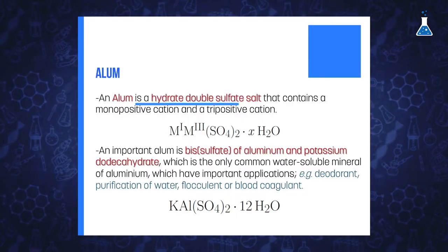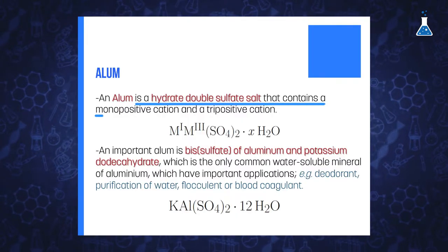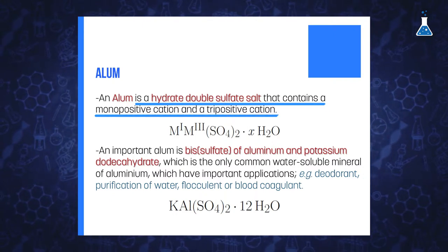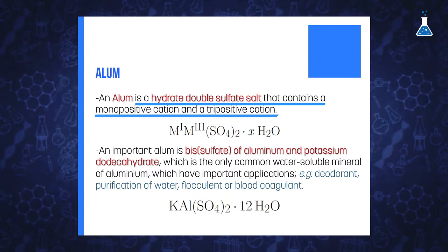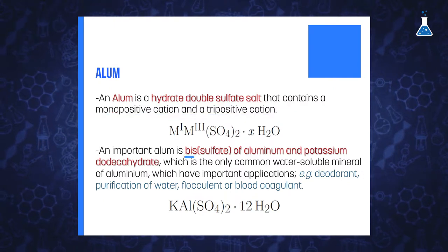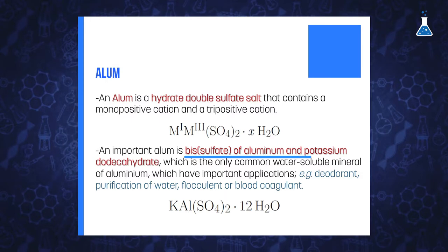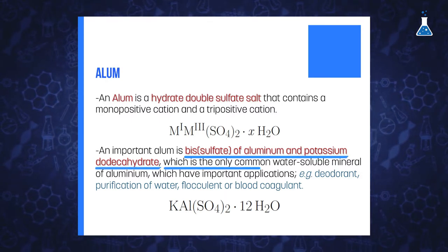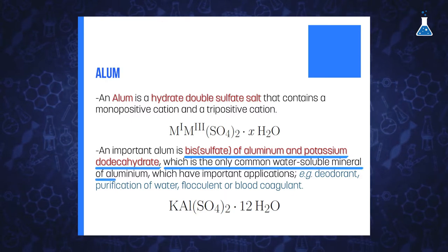With the obtained aluminum oxide, we are going to prepare a typical compound of aluminum known as alum. What is alum? It is a hydrate double sulfate salt that contains a monopositive cation and a tripositive cation. The compound that gives the name to this family is the sulfate of aluminum and potassium dodecahydrate, which is the only common water-soluble mineral of aluminum.